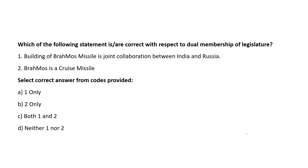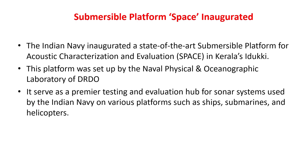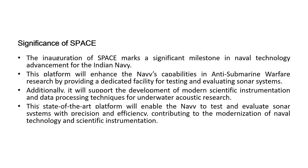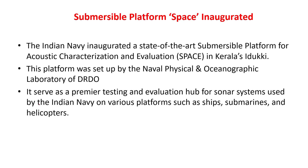Let us look at the MCQ on BrahMos. Statement one: BrahMos missile is a joint collaboration between India and Russia — correct. Statement two: it is a cruise missile — also correct. Hence the answer is C: both one and two.